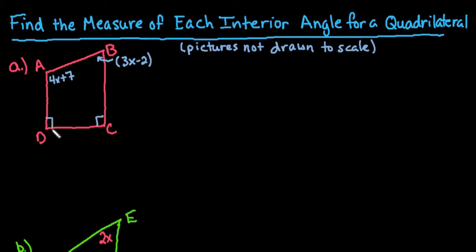remember that these little boxes here mean that those are 90 degrees. So we would just go through all of our angles, and we would set them up, and we would say that 4x plus 7 plus 3x minus 2 plus my two 90 degree angles, and I could just put 180, but not to skip a step. I want to show you where those came from, so remember that these are 90.